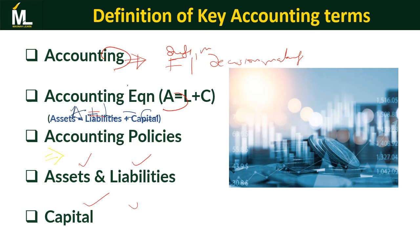An asset is anything that brings value to an organization, whereas a liability is anything that is an obligation to the organization which needs to be cleared. So we can say assets are positives and liabilities are negatives. For capital, these are resources that are put into the business — what you bring to the business when you choose to invest. These are the major terms we will come across throughout the entire course.